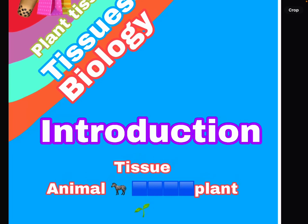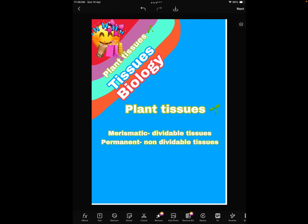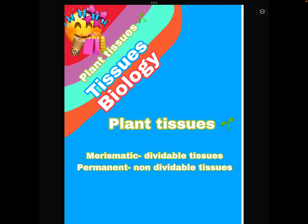Now that that's over - tissues are divided into two parts: plant tissues and animal tissues. Plant tissues are pretty self-explanatory: tissues which are present in the plant. Plant tissues are of two types: meristematic and permanent. Meristematic tissues are the tissues which can divide, and permanent tissues are the tissues which cannot divide.